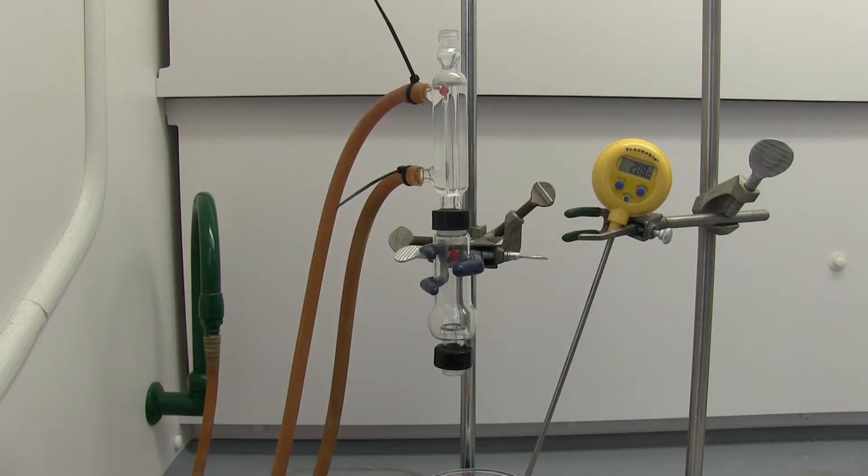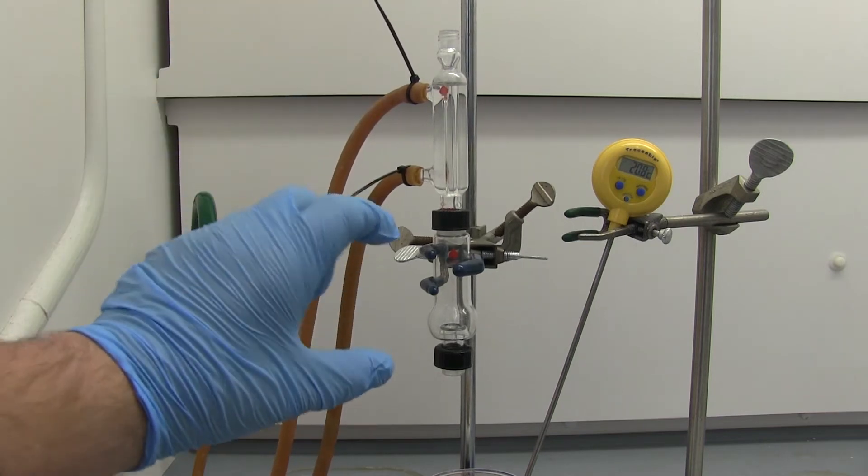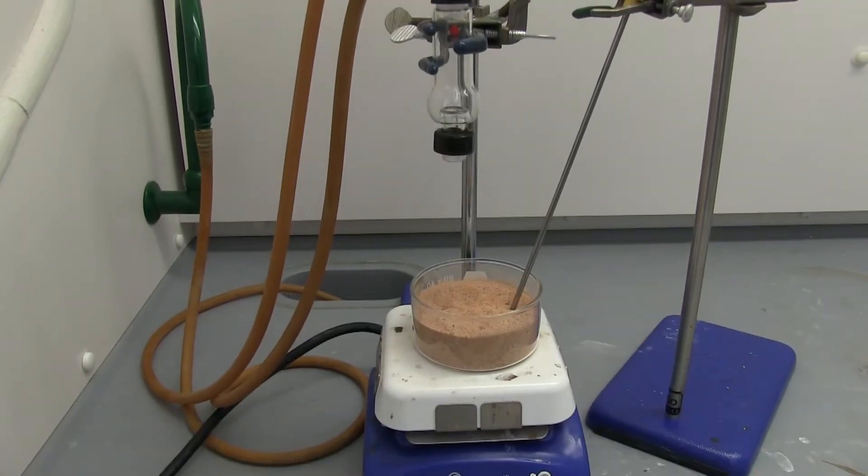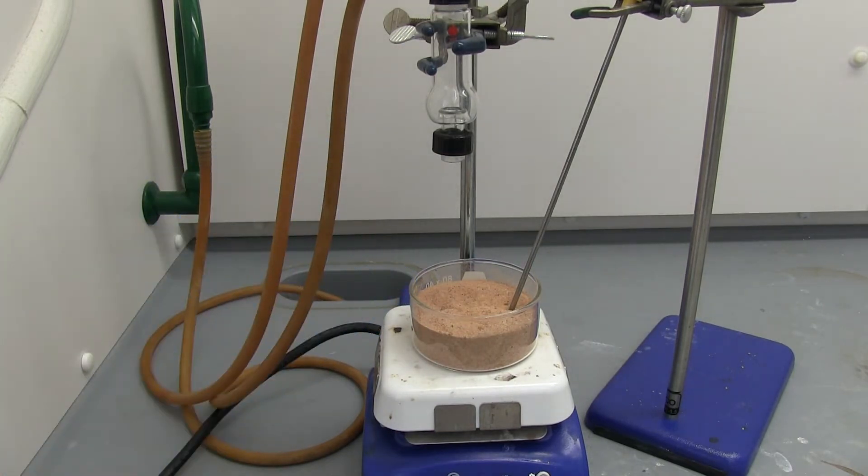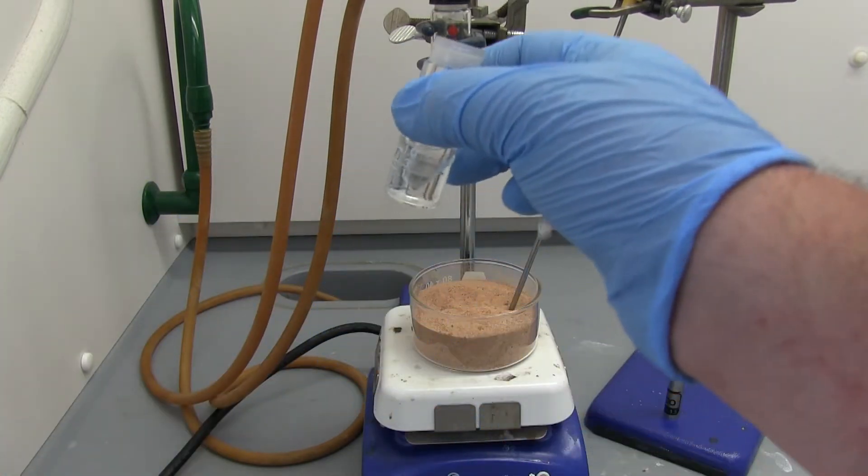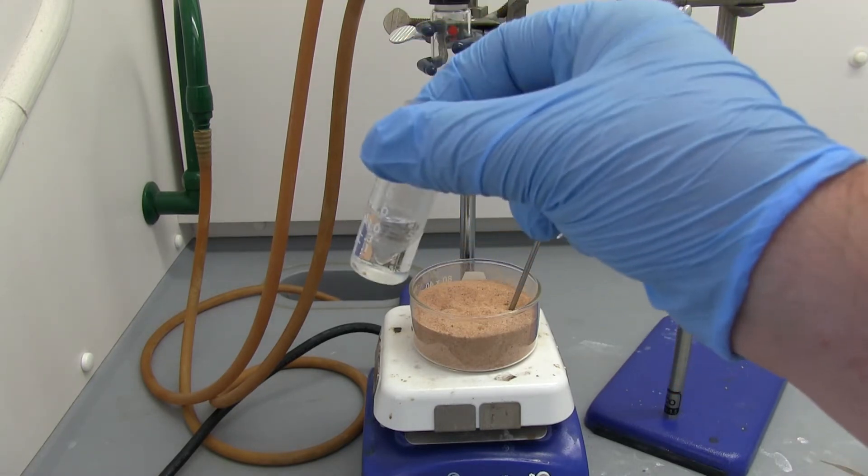Here we have a micro distillation setup. We have a water condenser with water flowing through, a Hickman column, and then we have a sand bath that we're going to lower this onto when we get the 5 mil conical vial.